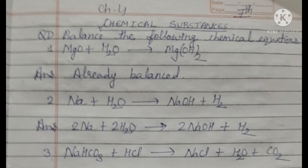Equation 2: Na (sodium) plus H2O (water) react to form NaOH (sodium hydroxide) plus H2 gas. To balance this equation, we write 2 before H2O, then write 2 before NaOH, and to balance sodium on the reactant side we write 2 before Na. So the equation is balanced.